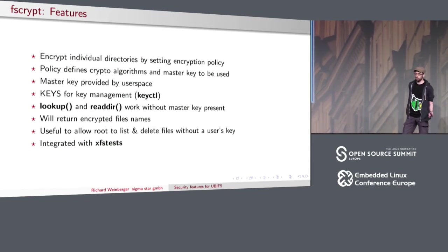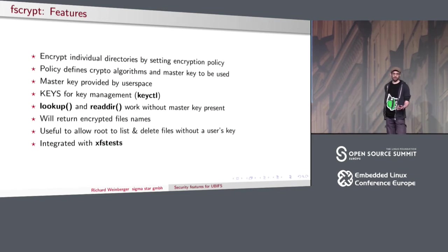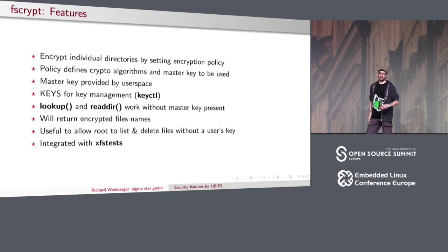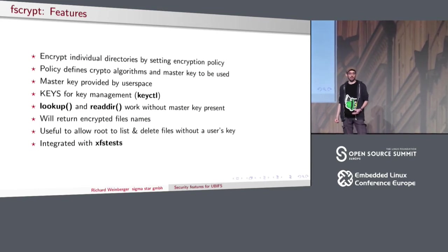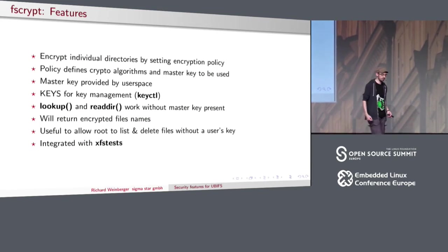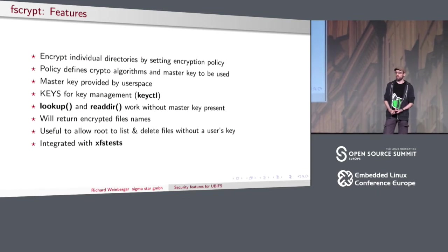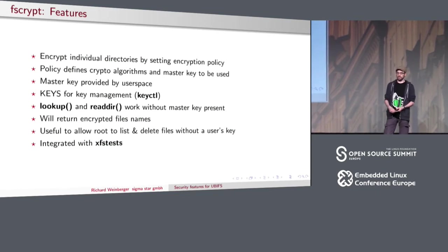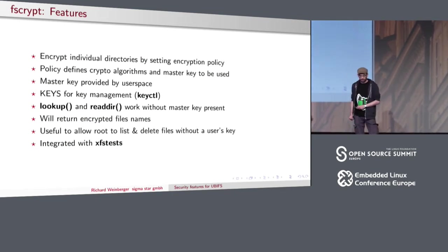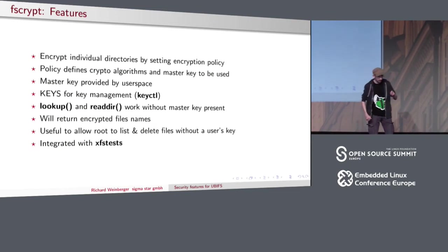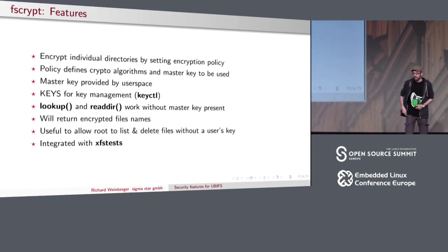One interesting property of FSCrypt is that it also works when the key is not present. When you do a readdir on an encrypted directory without the key, you still get a directory listing but you see only the encrypted file names. With proper permissions you're even allowed to unlink those files. The use case is straightforward: on Google Chrome OS, you want the admin to be able to delete a user's home directory even without knowing the password. This little feature made things really hard for UBIFS, as I'll explain later.